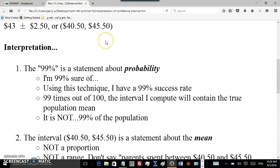All right, now this 99% does not mean 99% of the population. Some students wrote things like 99% of the parents spent between $40 and $45, or something like that. No, that 99% is only about the probability.